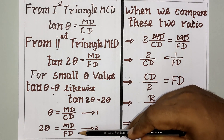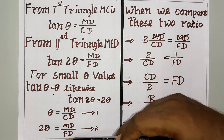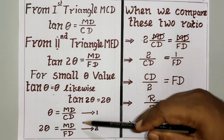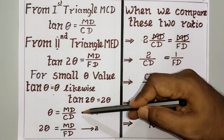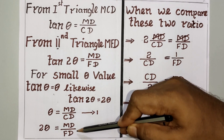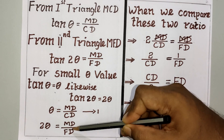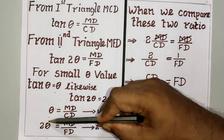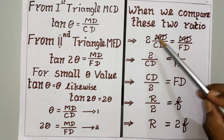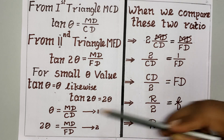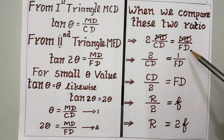The second equation becomes 2θ = MD / FD. Based on these two equations, we substitute the first into the second. Instead of θ in equation 2, we apply MD / CD, giving us: 2(MD / CD) = MD / FD.